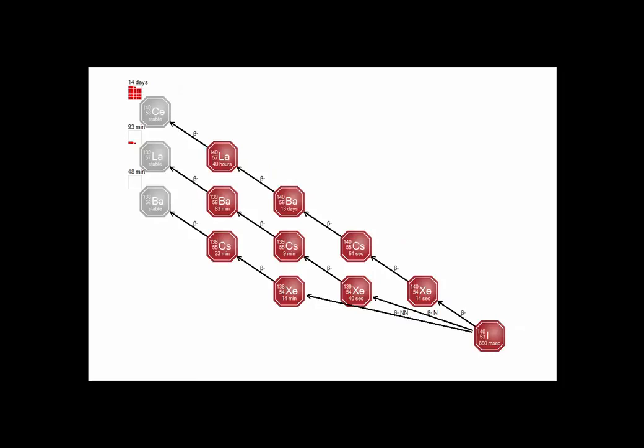Here's another example where iodine decays to xenon, and xenon we can extract - but we have to be fast, because the most popular decay chain has xenon with only a 14-second half-life. So we have to get it out of the fuel salt fairly quickly after the fission event has occurred, because the next products, cesium and barium, are very difficult to get out of the fuel salt.